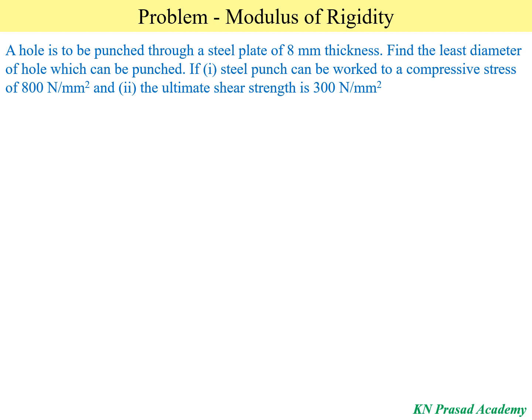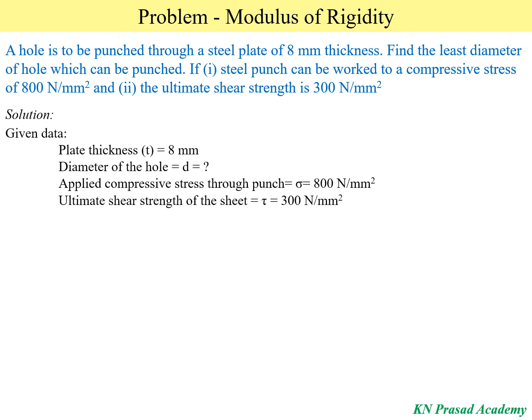First we have to write the given data. Plate thickness t = 8 mm. We have to determine the diameter of the hole, let's call it d. Applied compressive stress through the punch: σ = 800 newton per mm square. Ultimate shear strength of the sheet: τ = 300 newton per mm square.